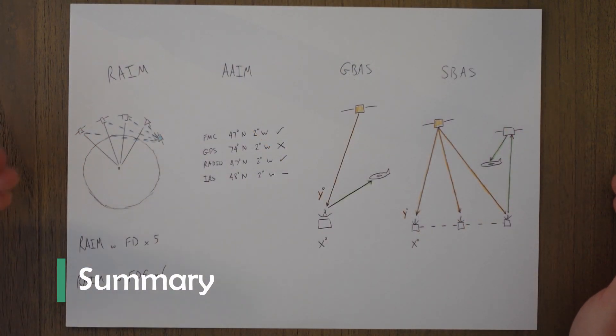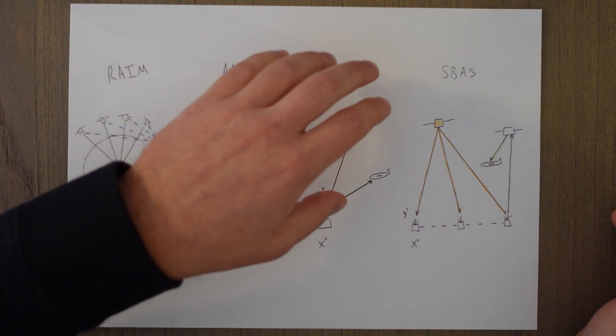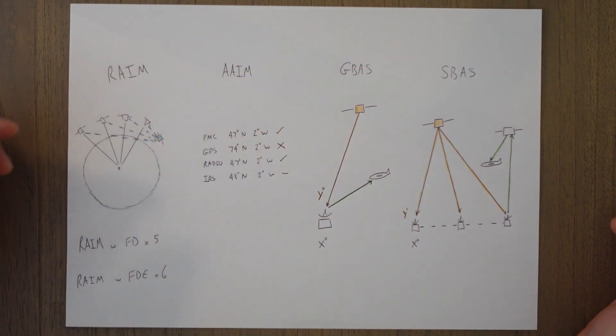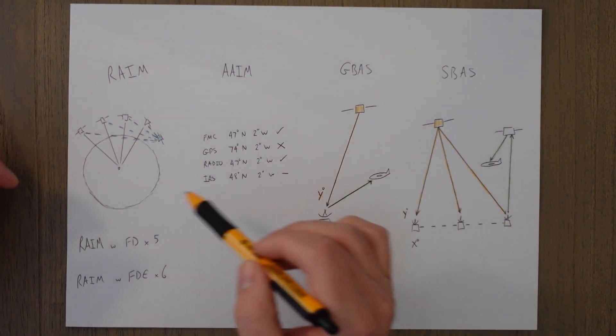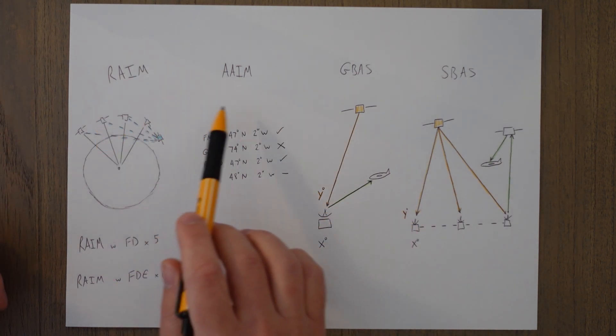So to summarize then a nice quick class on satellite augmentation. We've got air-based, ground-based and satellite-based. Air-based or ABAS systems fall into two categories.